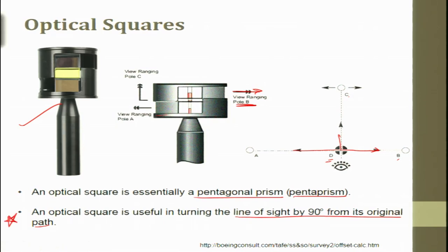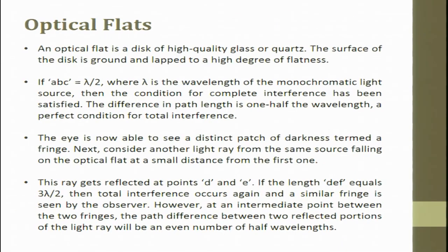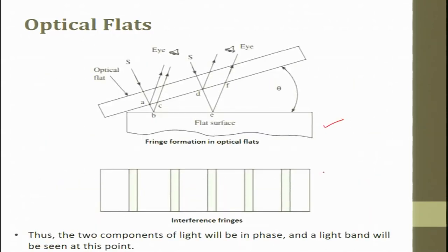This is a very important parameter and a wonderful device, because this pentaprism takes care of many of the misalignments present in the device itself. Next is the optical flat. An optical flat means you have an optical glass plate whose top surface and bottom surface are completely made flat.